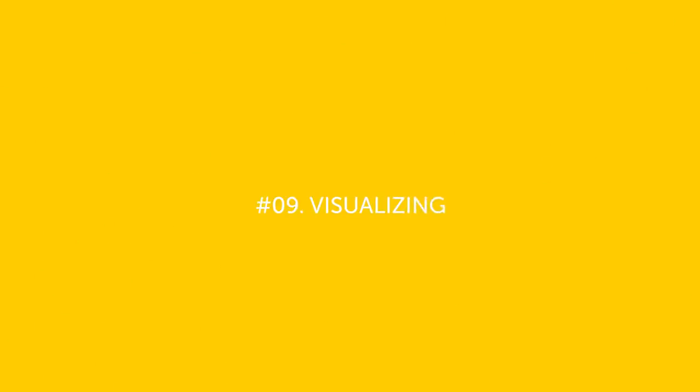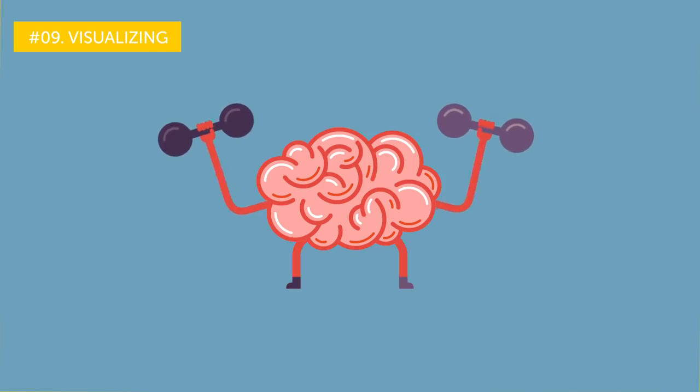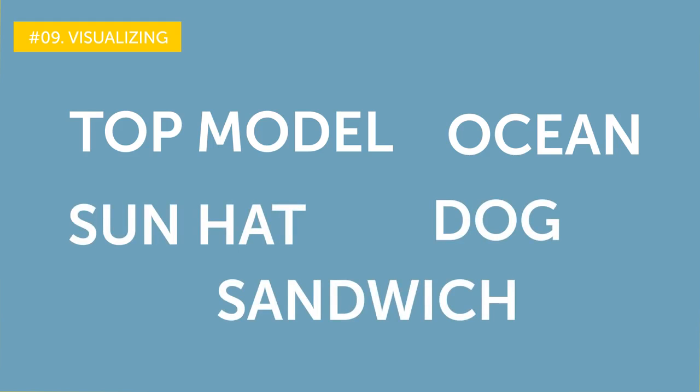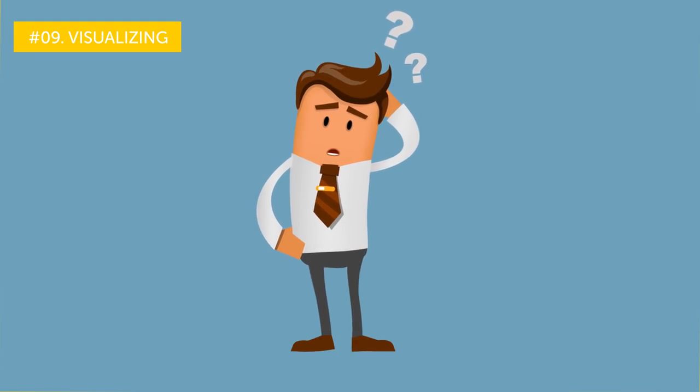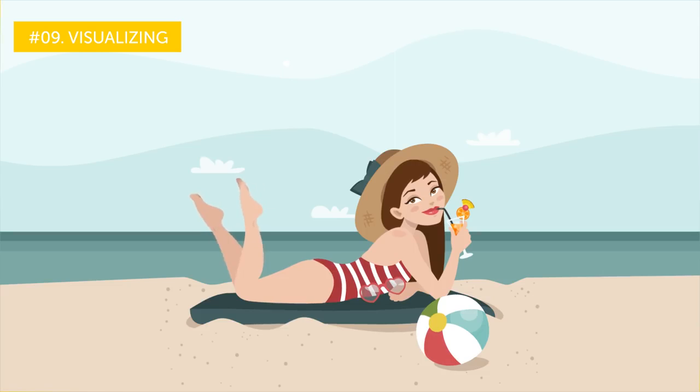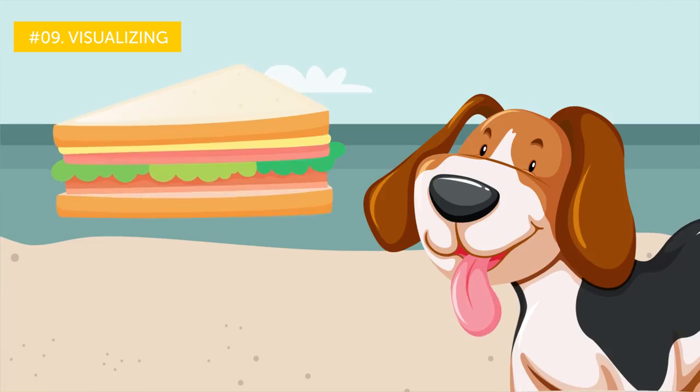Number nine, visualizing. Time for some memory training. It is an essential part of any brain workout. Can you quickly memorize the words you see on your screen? Top model, ocean, sun hat, dog, sandwich. Five seconds was not enough. What if we try to connect these words logically? A top model was having a photo shoot by the ocean. The wind blew her sun hat off, but the dog saved it and was rewarded with a sandwich. Now play this image in your mind.